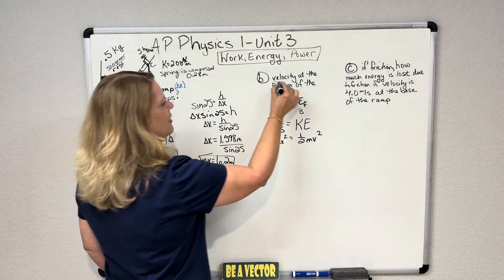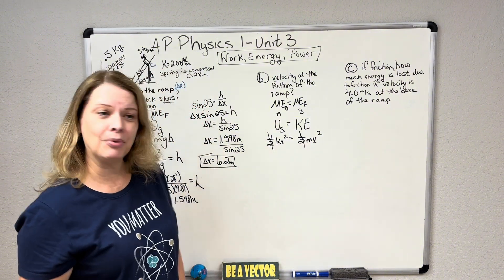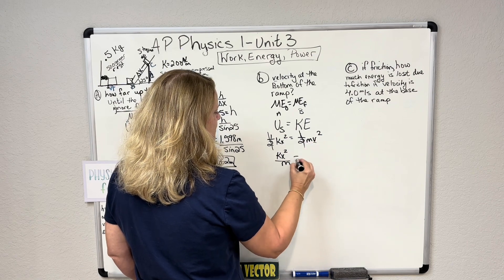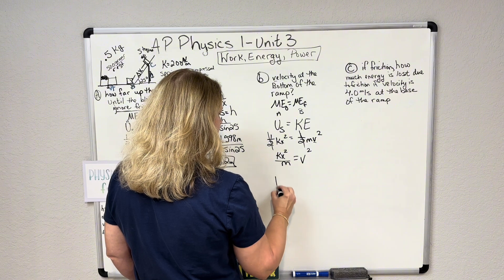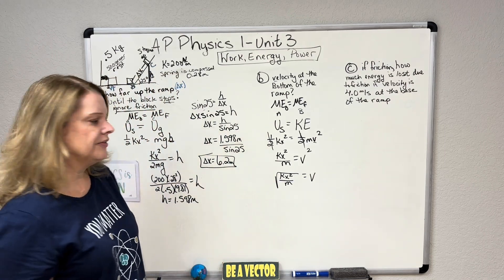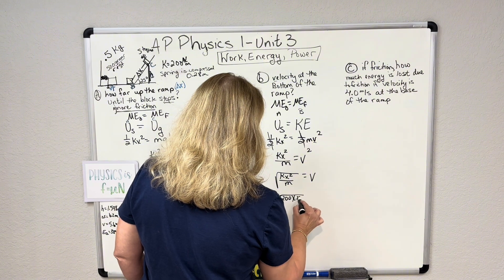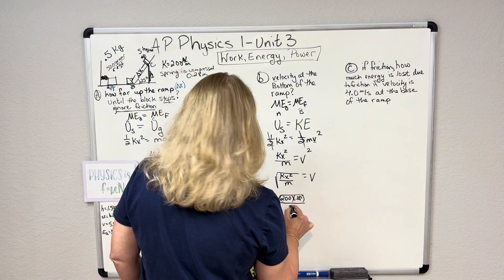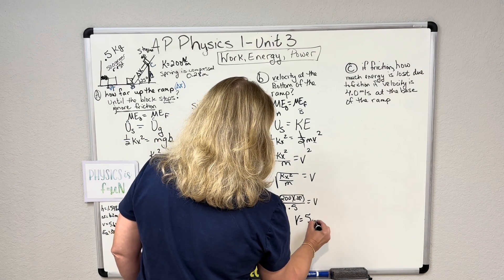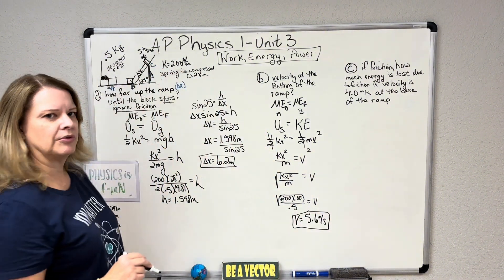What I'm solving for is that velocity. My halves cancel out because everybody brought half to the party. I have kx squared divided by m equals velocity squared. I'm going to take the square root of all of that and I get square root of kx squared over m equals v. You plug in 200 for the spring constant, 0.28 squared for the compressed distance, and my mass of 0.5, and that's going to give you a velocity of 5.6 meters per second, right before it heads up the ramp.